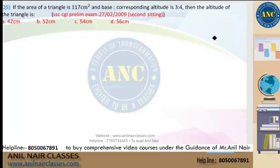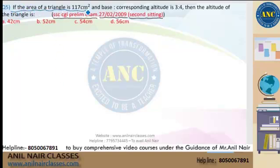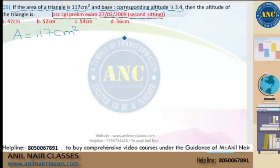This is a question on area. This is from the original SSC CGL prelims examination. It may be from 2009 or earlier, but I'm interested in taking original questions whether recent or older — it doesn't matter, as long as you are learning different varieties. The question states: the area of a triangle is 1176 centimeter square, and base to corresponding altitude is 3 is to 4.